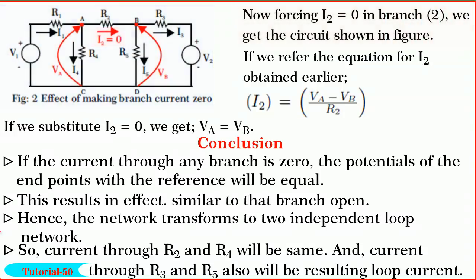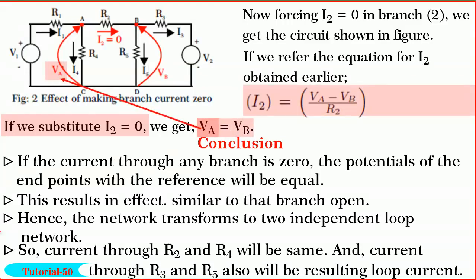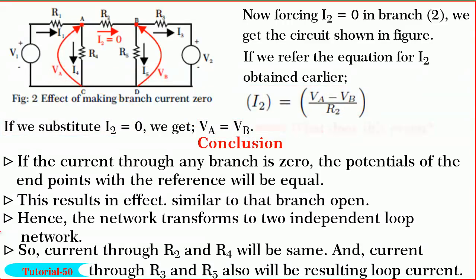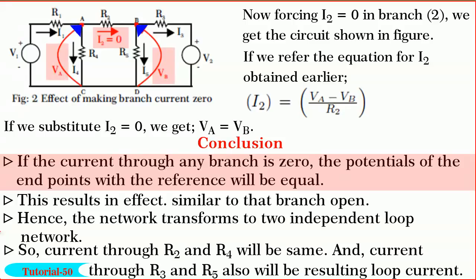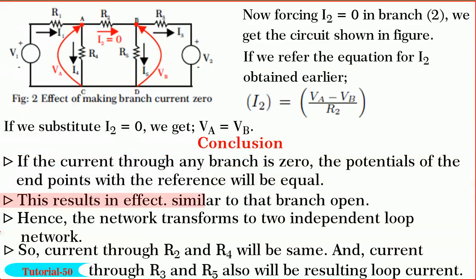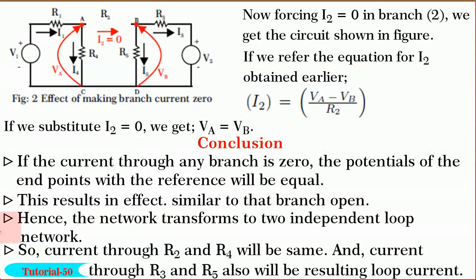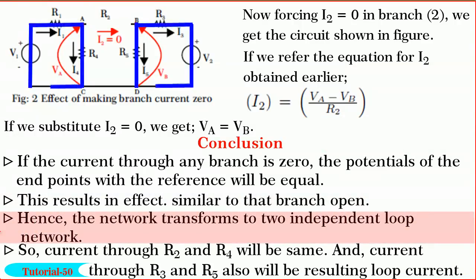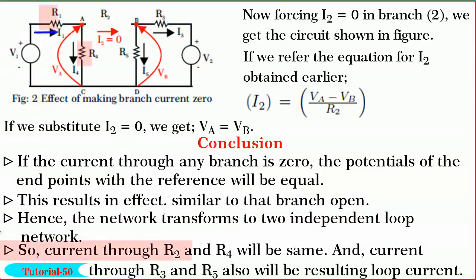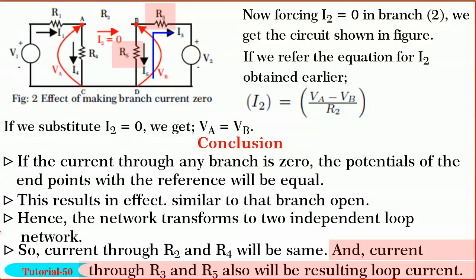By substituting I2 is equal to zero in the equation for I2 obtained earlier, we get phi A is equal to VB. What does this mean? If the current through any branch is zero, the potentials of the end points with reference will be equal. This results in effect as though the branch is open. Recall the open circuit concept — a zero current and a finite voltage implies open circuit. Hence, the network transforms into a two independent loop network. So, current through R2 and R4 will be same. And similarly, current through R3 and R5 also will be the resulting loop current. Hope you understood it.